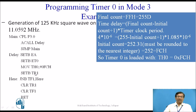Timer 1 is started using SETB TR1 because TH0 is controlled by TR1 in Mode 3, as seen previously. The program waits in a loop until the TF1 flag is set. Once TF1 is set, it is cleared and the subroutine returns to the main program. This delay routine generates a 4 µs time delay, and after every 4 µs P3.0 is complemented, producing a 125 kHz square wave on P3.0.